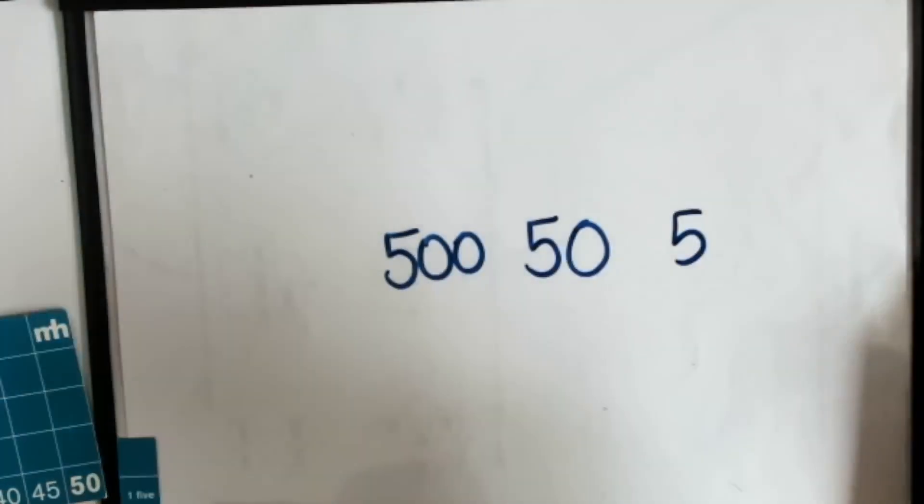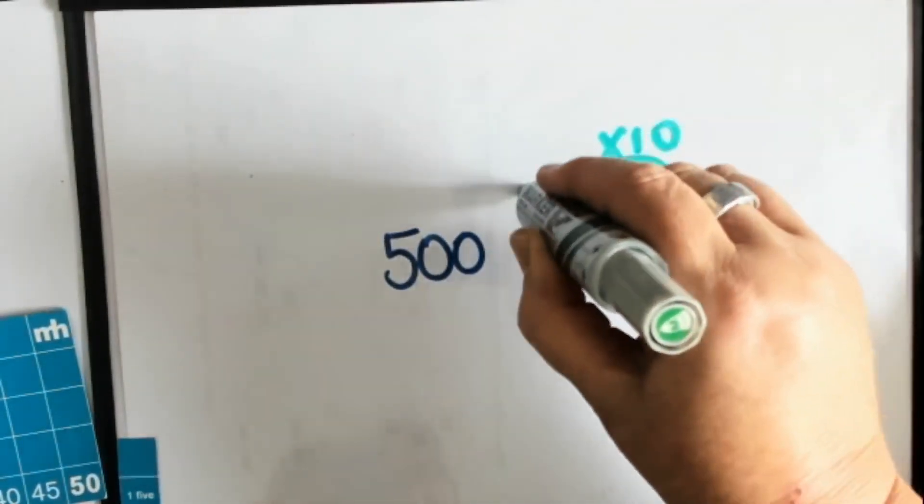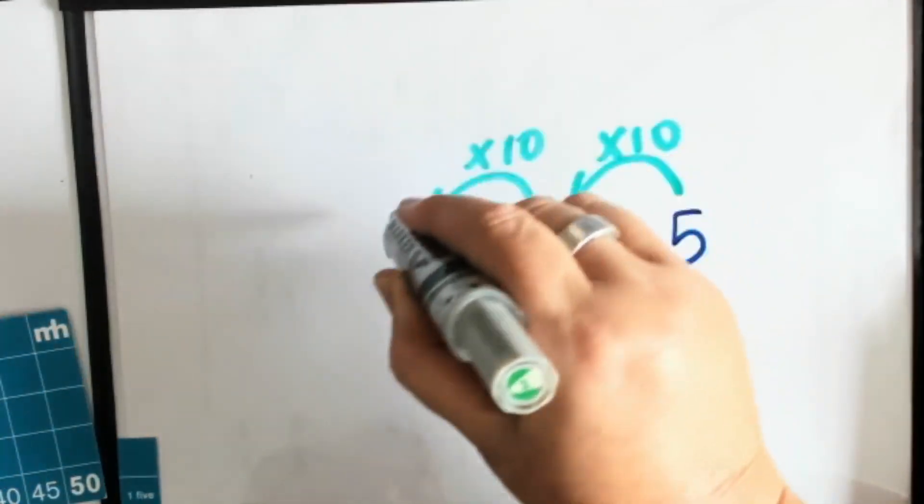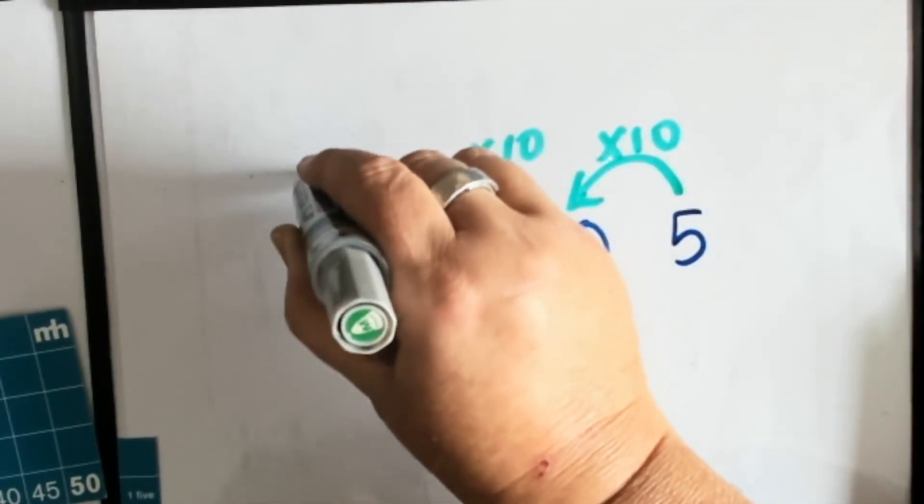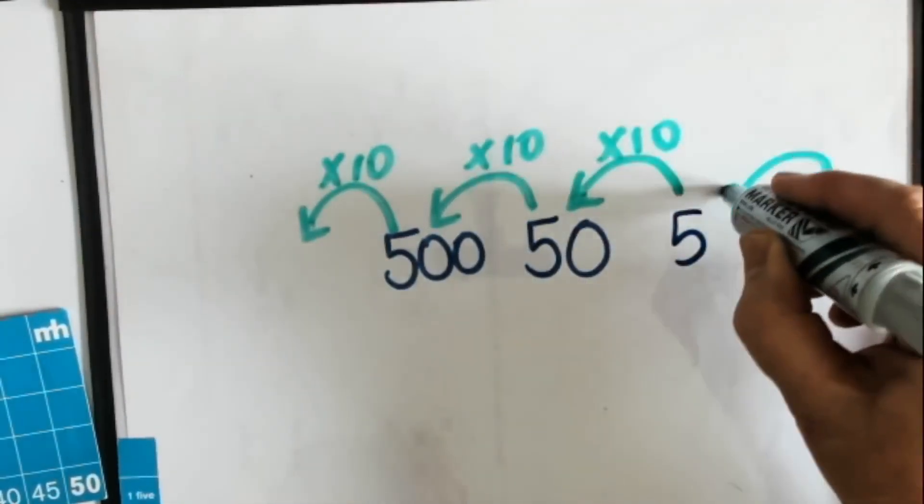when I multiply by 10. And that's where the pattern is in either multiplying or dividing by 10 or taking one tenth of the number.